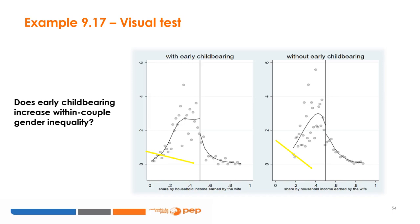Does early childbearing increase the within-couple gender gap in earned incomes? To answer this using the figures, we compare the shape of the distribution on the left panel with that on the right panel. Both distributions of the wife's share of household income exhibit a right tail, implying that most married women in our data earn less than their husband, irrespective of childbearing status. The tail of the distribution on the left panel is flatter than the one on the right panel, as indicated by the respective fitted yellow lines. This implies that married women who experienced early childbearing are less likely to earn more than their husbands — supporting the hypothesis that early childbearing increases the within-couple gender gap in earned incomes.